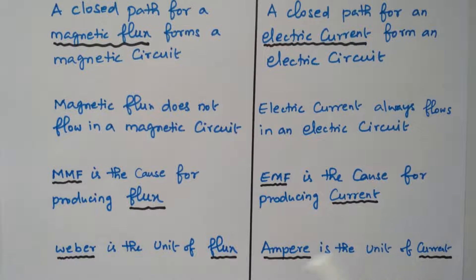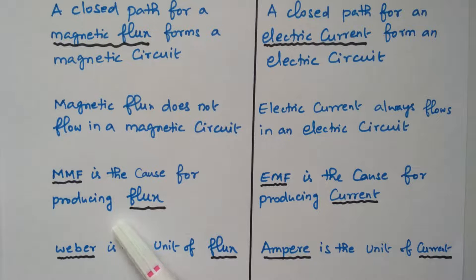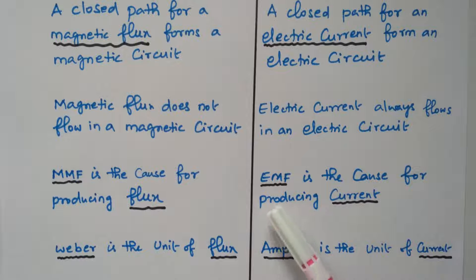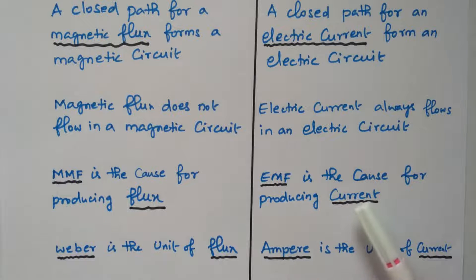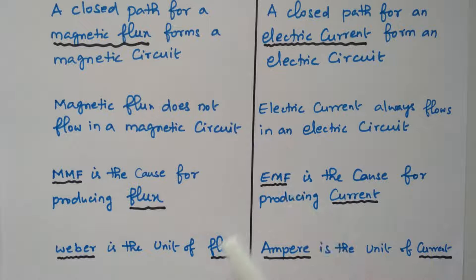The magnetomotive force (MMF) is the cause for producing the flux. Similarly, the electromotive force (EMF) is the cause for producing the current. So current is produced from EMF, and flux is produced from MMF.